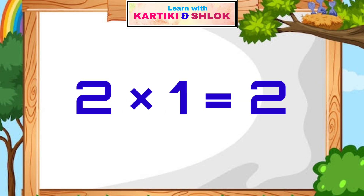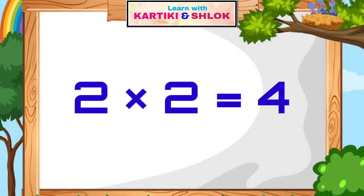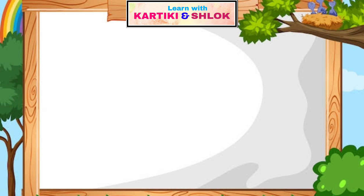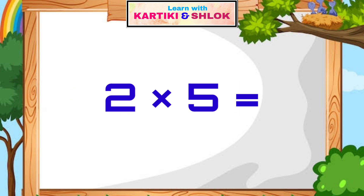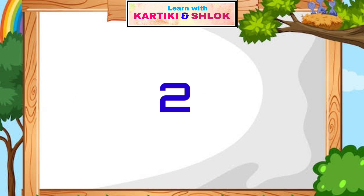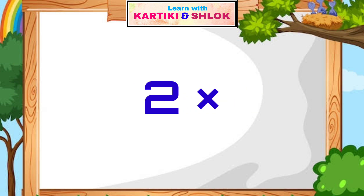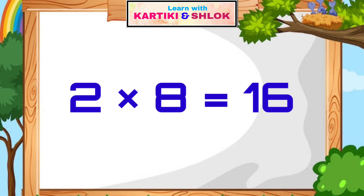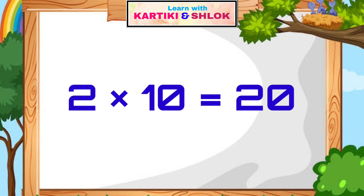2 times 1 is 2, 2 times 2 is 4, 2 times 3 is 6, 2 times 4 is 8, 2 times 5 is 10, 2 times 6 is 12, 2 times 7 is 14, 2 times 8 is 16, 2 times 9 is 18, 2 times 10 is 20.